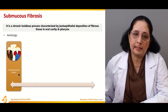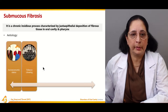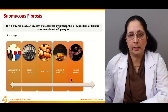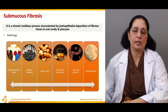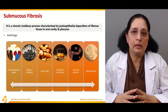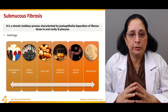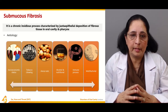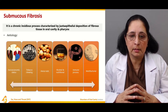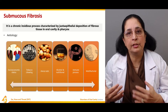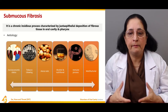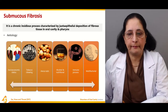Causes of submucous fibrosis include socioeconomic status, tobacco chewing, areca nuts, alcohol, nutritional disorders, immune processes, and multifactorial factors. These all lead to deposition of fibrous tissue in the oral cavity and pharynx. Nutritional deficiencies such as B12, iron, and folic acid can also involve the oral cavity.